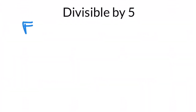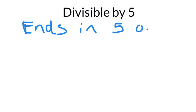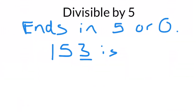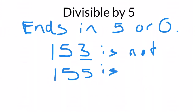Divisible by five is another easy one. All you need to do is check if the number ends in five or zero. The number 153 is not divisible by five because it ends in three, but 155 is divisible by five because it ends in a five.